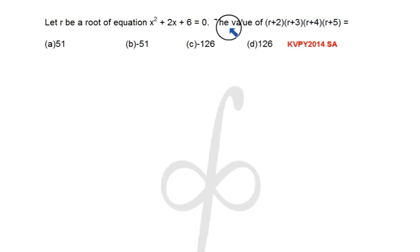We need to find the value of (r+2)(r+3)(r+4)(r+5), the product. Now here r is a root of this equation, and to solve this problem it's not a great idea to solve this equation, get the root, and then substitute the root here and simplify.